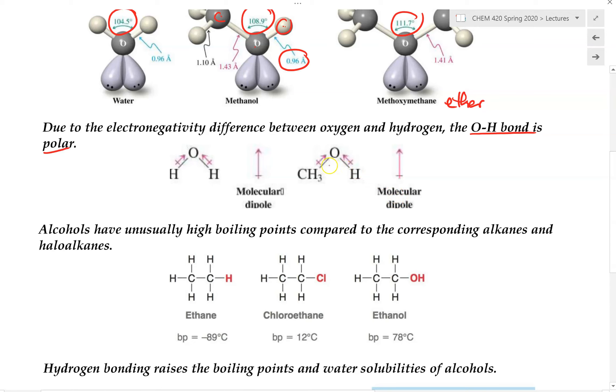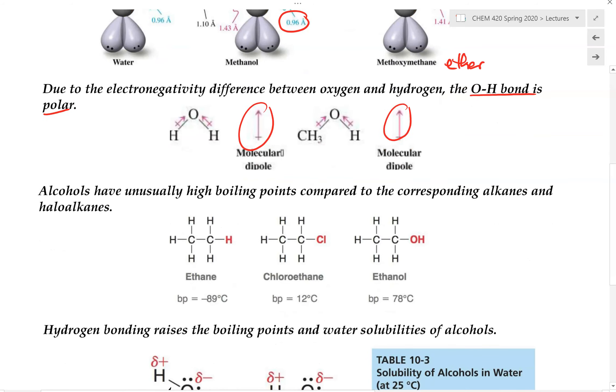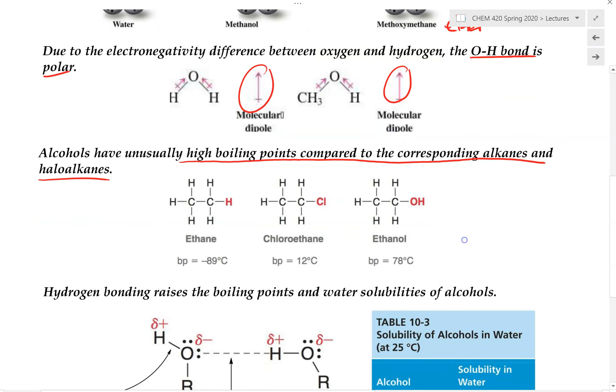Here's an example of an alcohol right here, and we can see it has a very similar net dipole moment in comparison to water. Therefore, alcohols have a very high boiling point compared to the corresponding alkane and haloalkane. Now we can see that the haloalkane is also polar as well, but its boiling point is not as high compared to ethanol or water.